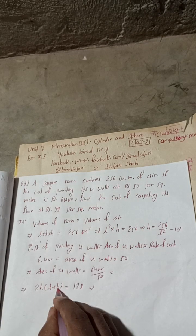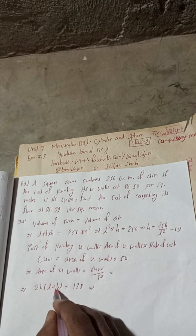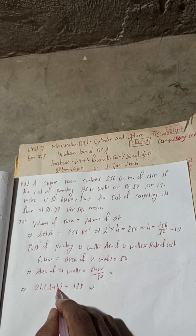Since it is a square room, L equals B. So L + L = 2L, and the formula becomes 2H × 2L = 4HL = 128.